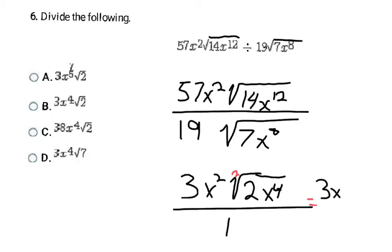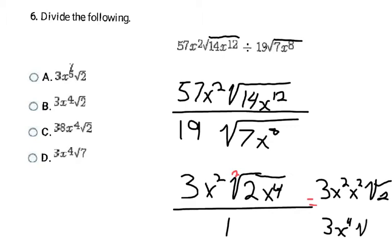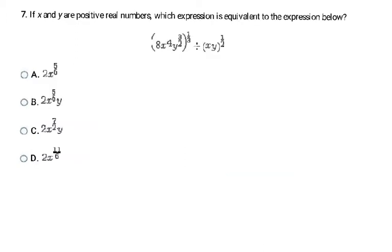Now I check if I can reduce the radical further. The 2 has no perfect squares, but the invisible index of 2 goes into 4 twice with no remainder, so I can reduce the variable part. That gives x² out front with nothing left under the radical. Combining the x squareds: x² times x² is x to the 4th. Final answer is 3x⁴ times square root of 2, which is letter B.